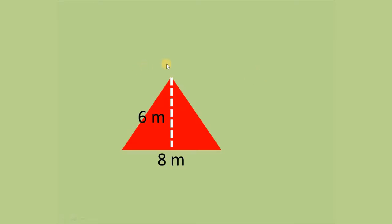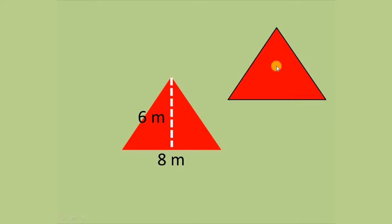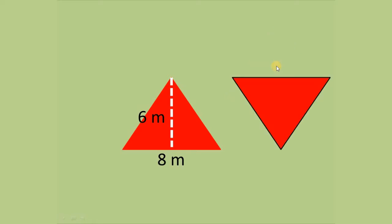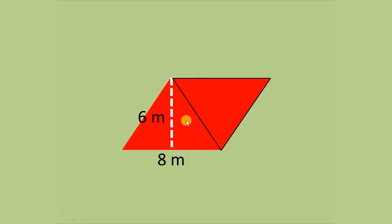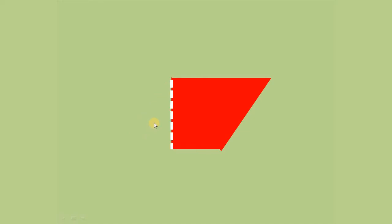Now I will show you the easiest way to find the area of the triangle we have discussed. We copy the triangle with the same area, flip it vertically, and join them together to form a parallelogram. Then, we remove a portion from one side and put it on the other side to form a rectangle.